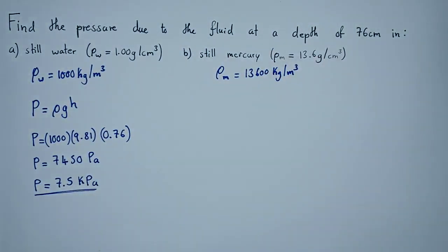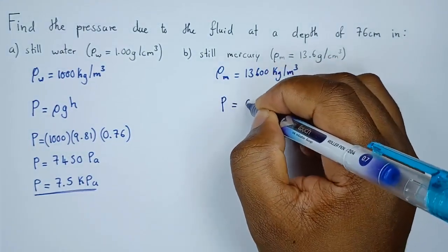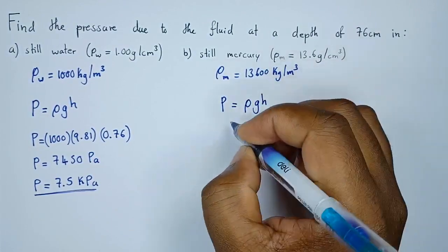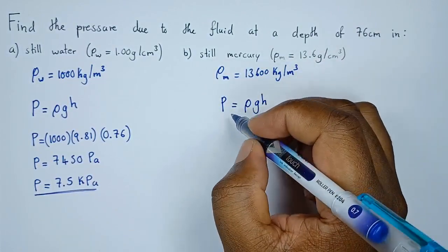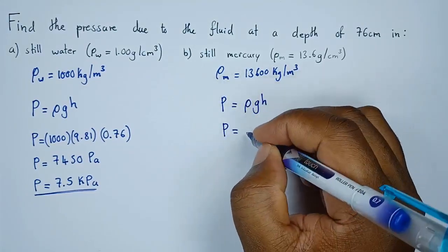Let's look at the pressure for mercury. Again the procedure will be the same. Pressure equals ρgh. In this case, the density of mercury is 13,600.